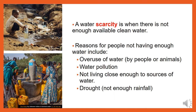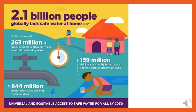Water scarcity is when there is not enough available clean water. There are a few reasons for people not having enough water, including overuse of water by people or animals, water pollution, not living close enough to sources of water, or drought when there is not enough rainfall. 2.1 billion people globally lack safe water at home. Of those people, 263 million spend more than 30 minutes per round trip collecting water, and 844 million do not have basic drinking water services, with 159 million drinking water directly from surface sources such as streams or lakes.